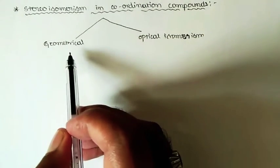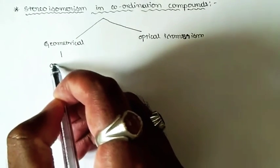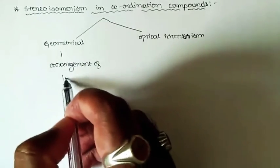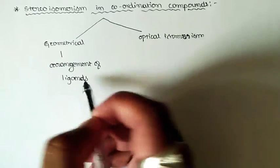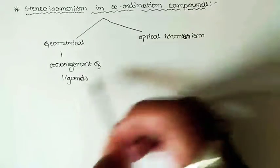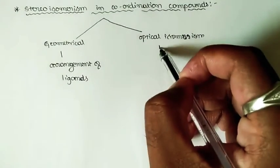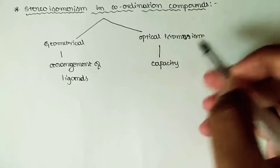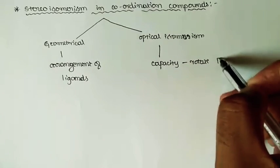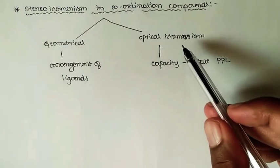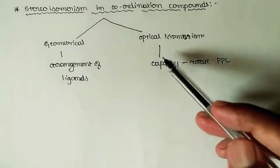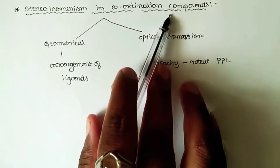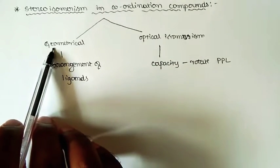Geometrical isomerism is purely dependent on the arrangement of ligands around the central metal ion. Optical isomerism depends on the capacity of the coordination material to rotate the plane polarized light — that is, the dextro and levorotatory phenomenon shown by the coordination compound. Now we shall look at both kinds of isomerism.